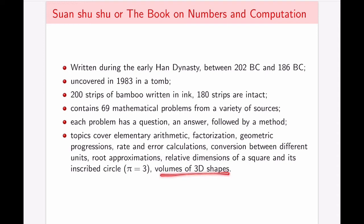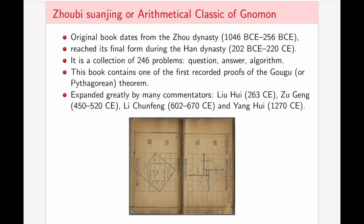The next source of ancient Chinese mathematics that we have is arithmetical classic of Gnomon. Gnomon is an L-shaped construction tool, but it's really something that you place on a sundial to cast a shadow and actually tell you the time. The original book dates from the Zhou Dynasty, but it's reached its final form, having been edited and copied and improved by people, in the Han Dynasty, so minus 200 years.